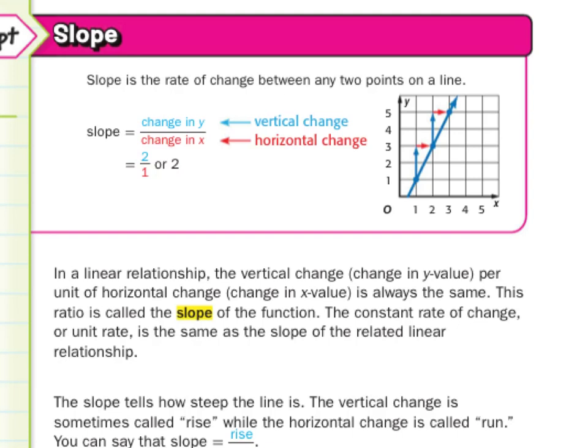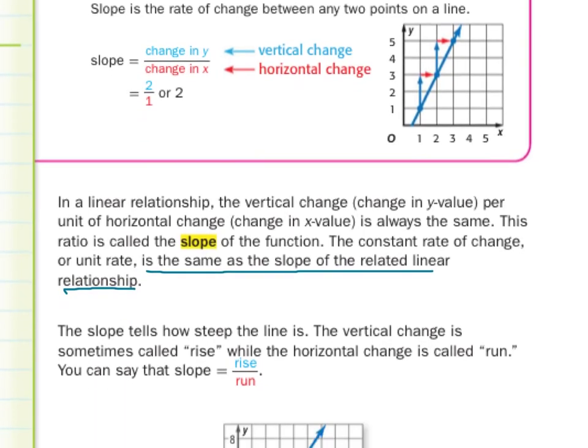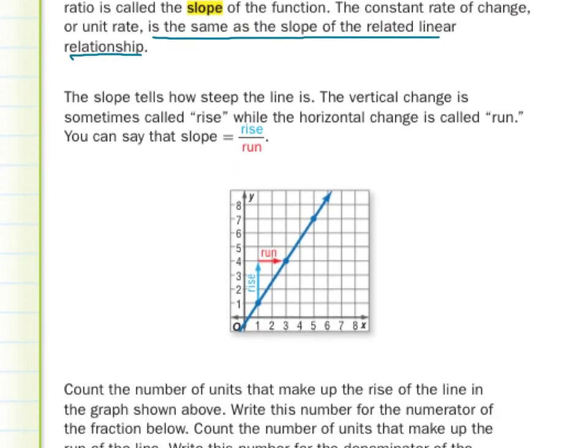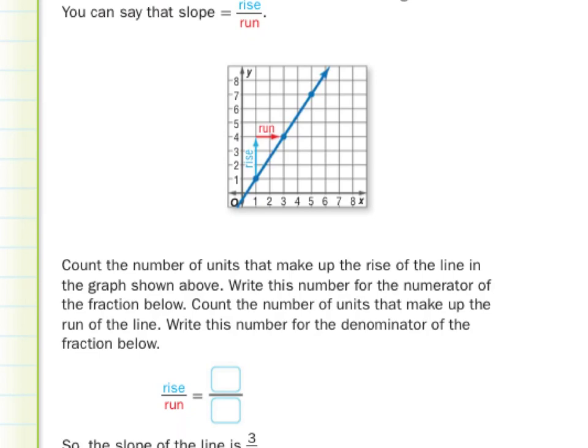In a linear relationship, the vertical change, change in y value, per unit of horizontal change, change in x value, is always the same. The ratio is called the slope of the function. The constant rate of change, or unit rate, is the same as the slope of the related linear relationship. So if you're thinking constant rate of change seems a lot like slope here, well, in this case, with these linear relationships, it is. The slope tells you how steep the line is. The vertical change is sometimes called the rise. You think the vertical, you're going up, rising, or sometimes going down, falling, while the horizontal change is called run. You can say that slope is equal to rise over run.